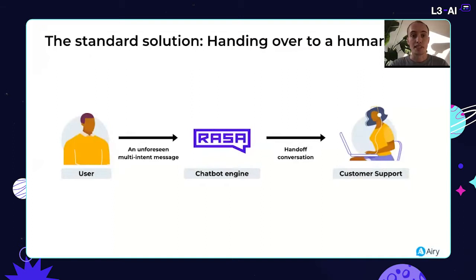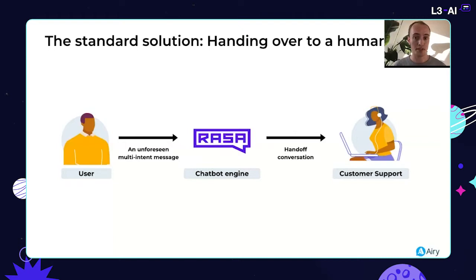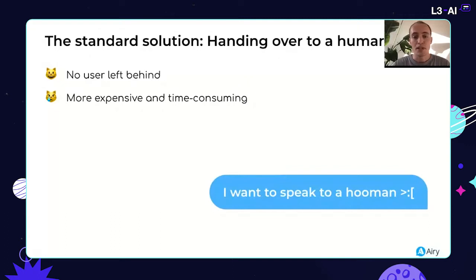A standard solution for dealing with this is handing over the conversation to a human — something lots of companies do. The chatbot engine is trained to recognize when it cannot handle a message, then pings customer support in your help desk software and they take over the chat, while the chatbot engine turns off so it doesn't interrupt the conversation. This works well because every user request always gets answered — no dead ends. But it also brings problems: you need customer support agents, and training them and having them answer all those questions is expensive and time consuming.